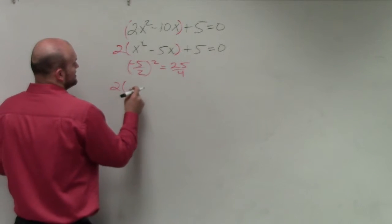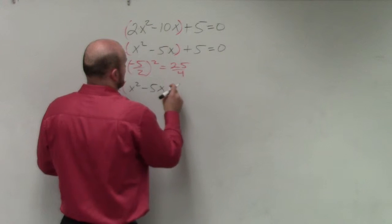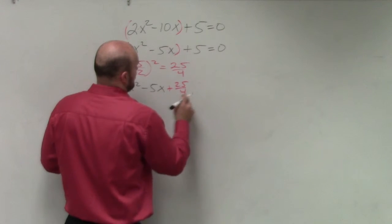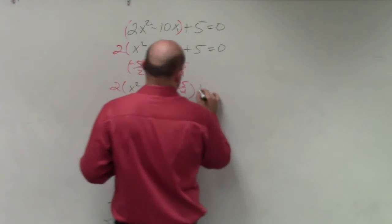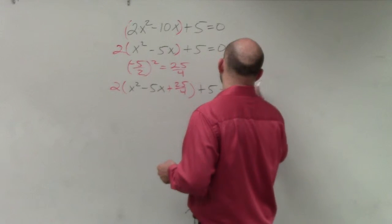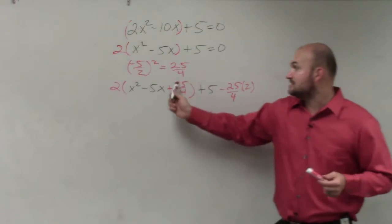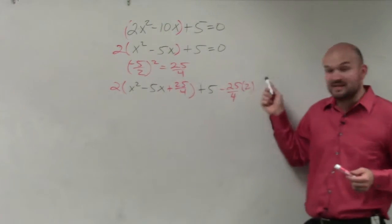So therefore, we have 2 times x squared minus 5x plus 25 over 4 plus 5 minus 25 over 4. But then again, ladies and gentlemen, remember you have to multiply that by 2, right? Since this one was being multiplied by 2, you had to multiply this one by 2.